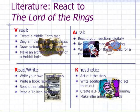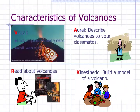This slide deals with the output from the different learning styles. Visual learners could create a Middle Earth map or a diagram of the plot with software such as Inspiration. Oral learners could record their reaction digitally or recreate a scene using dialogue. Read-write learners could write their own quest story or a book review. Kinesthetic learners could act out the story or write and act out additional scenes.